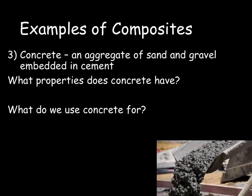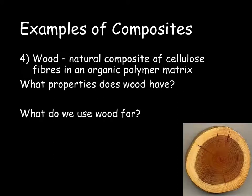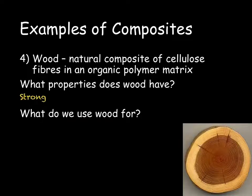Our third example is concrete. Concrete is made of a mixture of sand and gravel embedded in cement, so we are taking cement and turning it into a composite. Concrete is very, very strong and as such it is the perfect building material. The final example is a natural composite, which is wood. Wood is a natural composite made of cellulose fibres in an organic polymer matrix. Wood is very, very strong and we can use it as a building material, amongst many other uses.